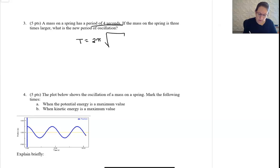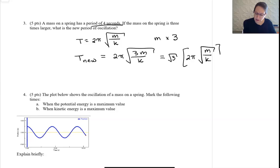You would use your equation for the period: 2π square root of m over k. If we have m times 3, then your new period is 2π square root of 3m over k, which would be square root of 3 times the original period.